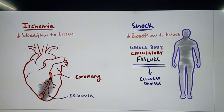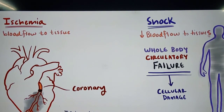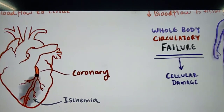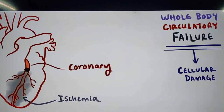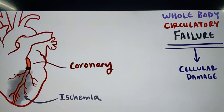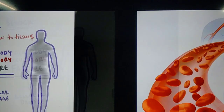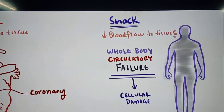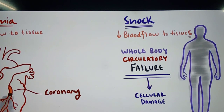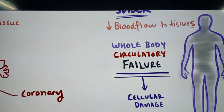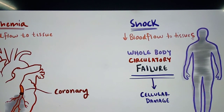We can compare shock with ischemia. In both ischemia and shock there is decreased blood flow to the tissues. But in ischemia, the coronary artery is blocked because of atherosclerosis or other reasons, and the blood supply is cut off to that specific area — lack of blood supply means lack of oxygen and nutrients, causing that part to go into ischemia, and the cells and tissues there start dying. Whereas in shock, there is decreased blood flow to the tissues in the entire body, which causes cellular damage throughout. The cells cannot function properly and eventually start dying. So shock is a whole body circulatory failure — the entire body is involved, and multiple organs are affected.